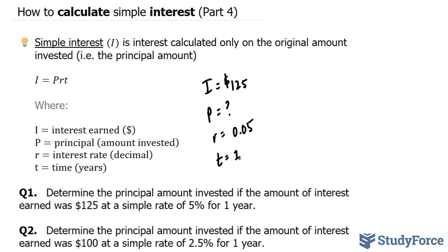I'm going to plug in everything I know into my formula. My formula is right here, i is equal to PRT. So let's see, i is 125, p is blank, I'm going to leave it as p, times 0.05 and 1.